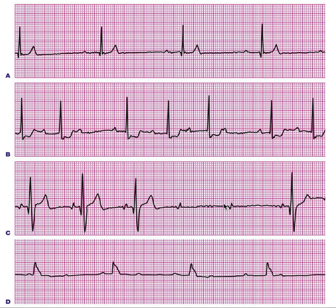The PR interval stays constant in Mobitz Type 2 because the block is happening below the AV node — that's why the PR interval is constant. This is in contrast to Type 1 where the block is at the AV node itself.